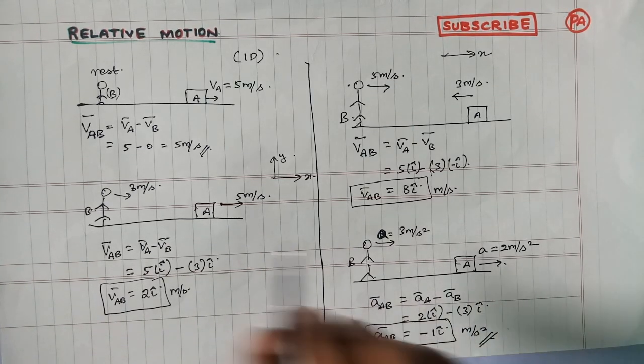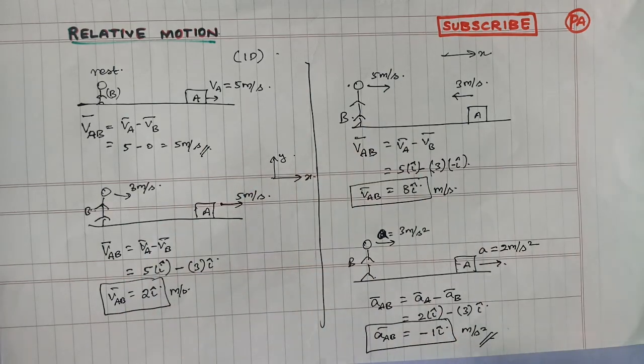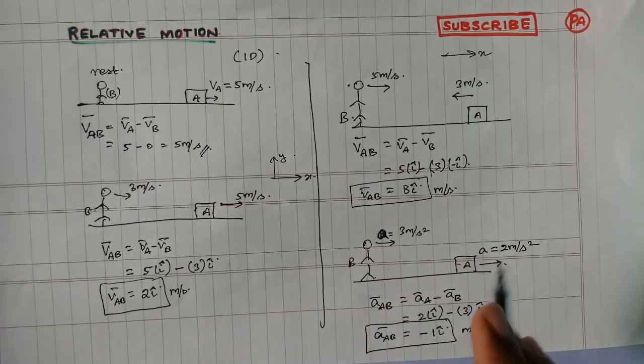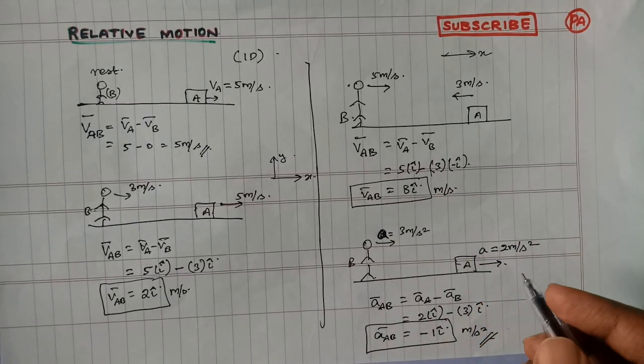What is one-dimensional relative motion? Relative velocity in two-dimensional motion — can you see that?